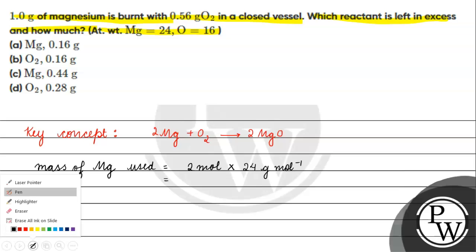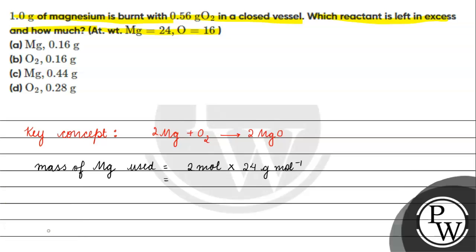The atomic mass of magnesium is 24, so the mass of 2 moles of magnesium will be 48 grams.